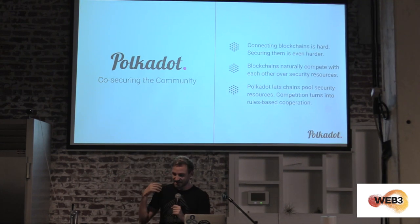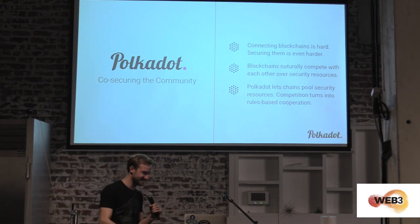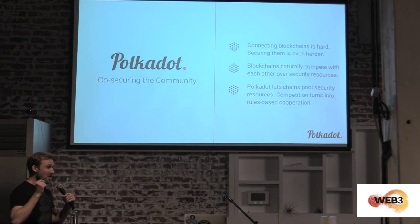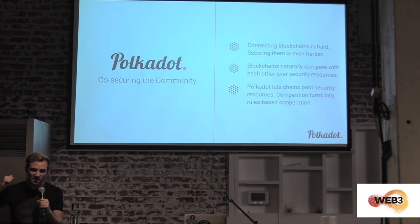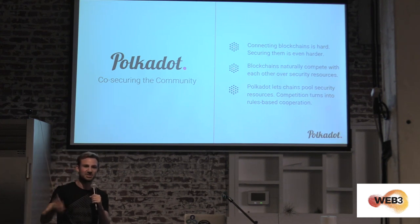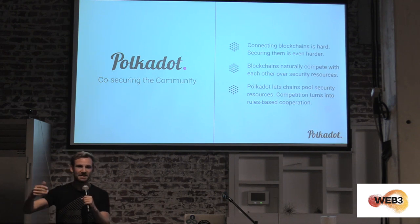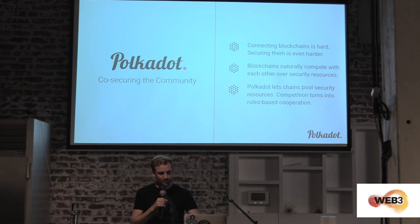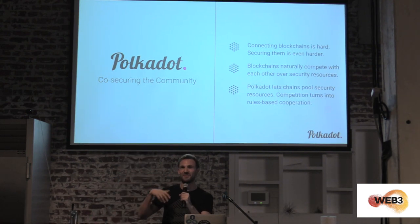Another really important point about Polkadot beyond interoperability is that Polkadot is supposed to co-secure the whole community. Connecting blockchains is really hard — we will be working intensely on that over the next years. But securing a chain is almost even harder. If you come up with a great idea for a new Zcash-like or smart contract chain, today you not only have to implement all the networking and engineering — you also need to build a community that secures your chain, incentivize miners, build a foundation, and so forth. This is all a lot of noise and overhead if you really just want to innovate on that key part — how your state machine works. That is something we want to tackle with Polkadot. Polkadot lets these chains pool security so that competition turns into rules-based cooperation.